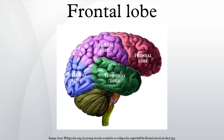On the lateral surface of the human brain, the central sulcus separates the frontal lobe from the parietal lobe. The lateral sulcus separates the frontal lobe from the temporal lobe. The frontal lobe bottom can be divided into a lateral, polar, orbital, and medial part, each consisting of particular gyri.